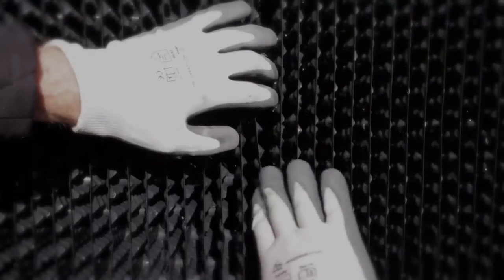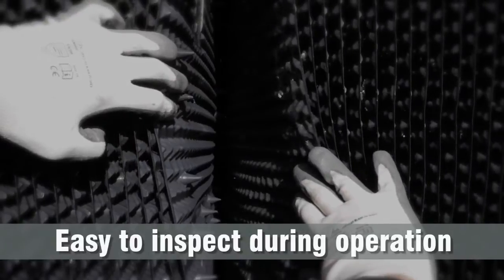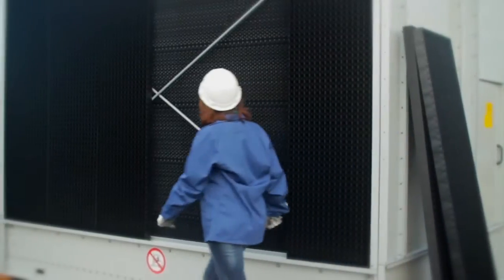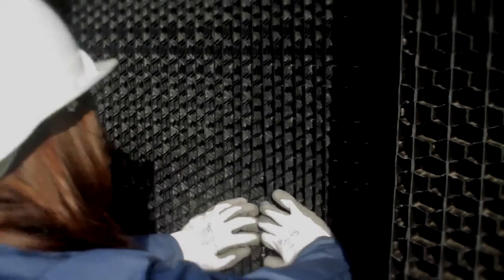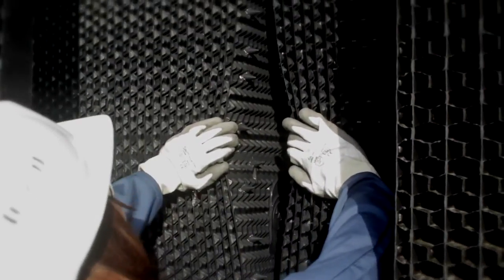The fill can be inspected from the outside of the unit, while it's in operation. Simply remove the combined inlet shields and you get immediate access to the fill sheets. You can inspect right to the core of the fill, enabling you to evaluate exact conditions at any time.